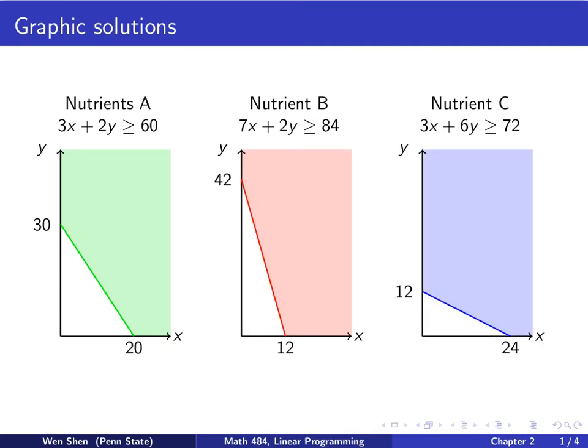Finally, for nutrient C, here's our constraint. In the first quadrant, we locate the two intercepts for this equation with the equal sign, and we connect it, which is the border, this dark blue, and the area above it, shaded in light blue, is the region where this constraint is satisfied.